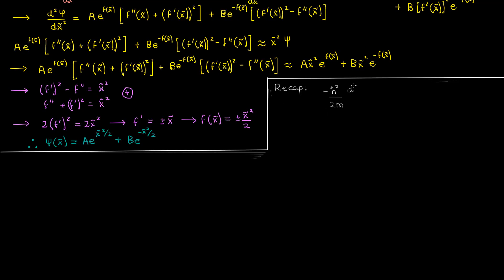Briefly, we set up the time-independent Schrödinger equation with a potential corresponding to the harmonic oscillator. Next we introduced a dimensionless x and a constant c based on our total energy level. Using these quantities we formulated a partially non-dimensionalized version of the harmonic oscillator Schrödinger equation.